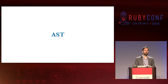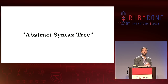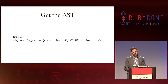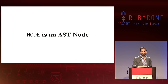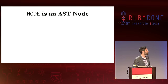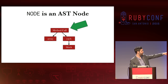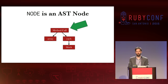The first step is to get an AST. What is an AST? AST stands for Abstract Syntax Tree. The way that we can get that is via this function called rb_compile_string. The return value there — this is C code by the way — that return value node is actually an AST node. It's actually the top of the AST. That node star is actually pointing at the top node.